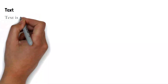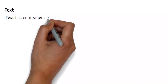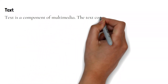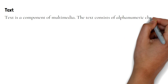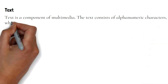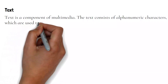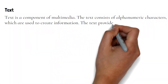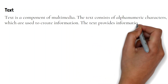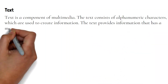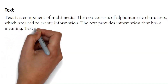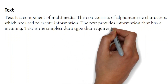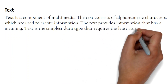Text is a component of Multimedia. The text consists of alphanumeric characters which are used to create information. The text provides information that has a meaning. Text is the simplest data type that requires the least storage.